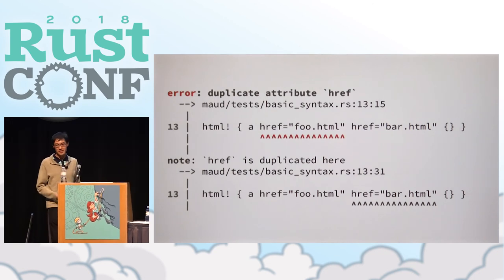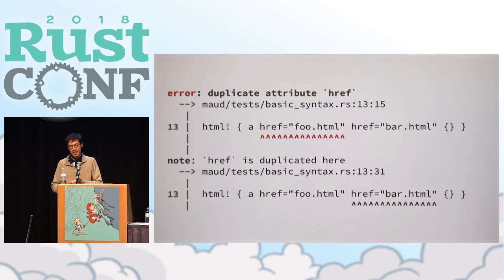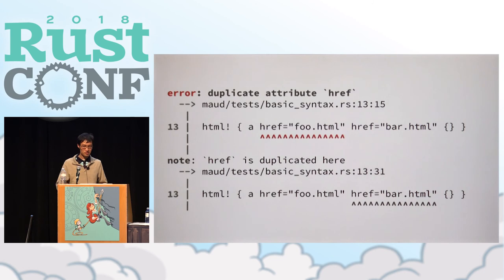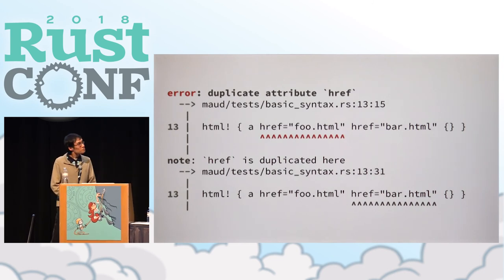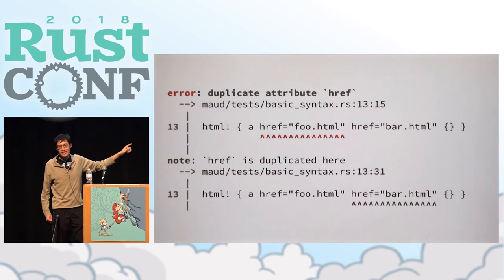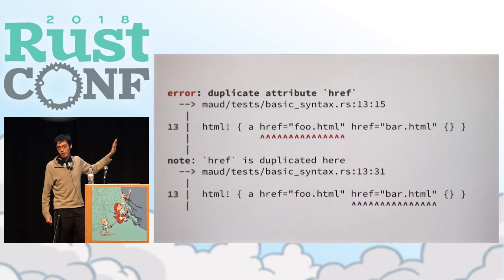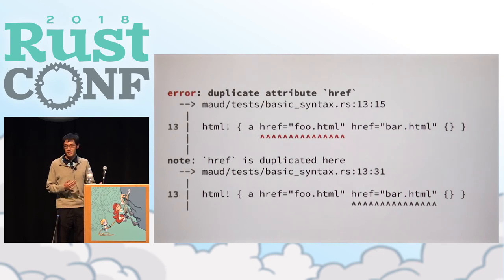One example of where using an AST and keeping spans is really nice is in a particular error message that Maud gives. In HTML, elements can have attributes, and one of the rules is that you can't define the same attribute twice on the same element — Maud enforces this rule as well. If you have a closer look at this error message, you'll see that it explicitly marks out the parts of the original code relevant to this issue. This wouldn't have been possible if we didn't keep an explicit structure representing the user's input, and it wouldn't be possible if we didn't keep track of the locations of every single syntax node.